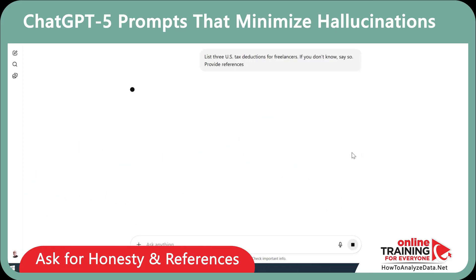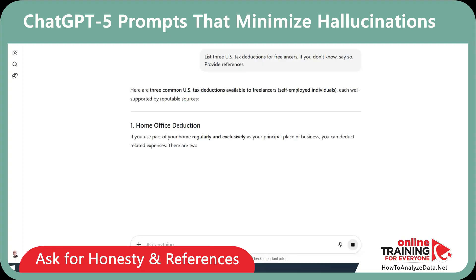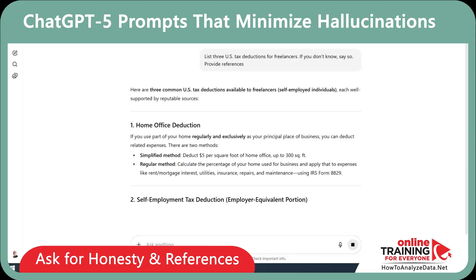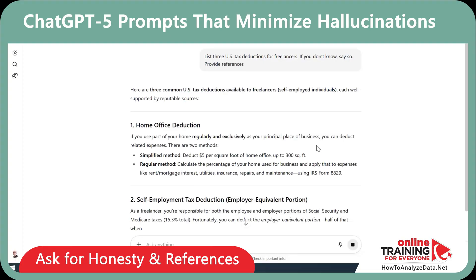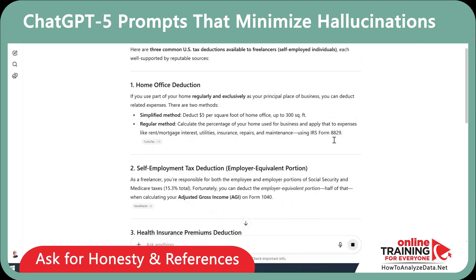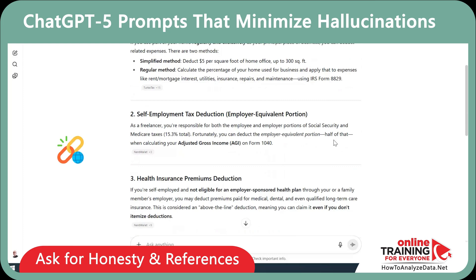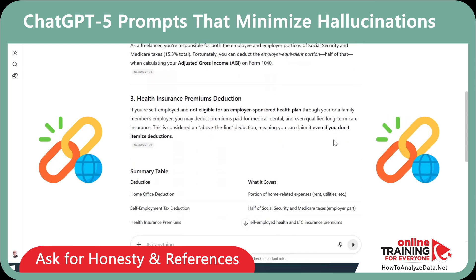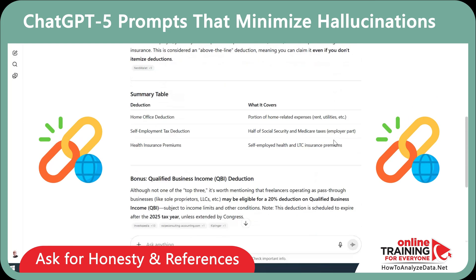ChatGPT listed multiple deductions: home office deduction, self-employment tax deduction, and health insurance premium deductions. All of them include citations from IRS.gov.